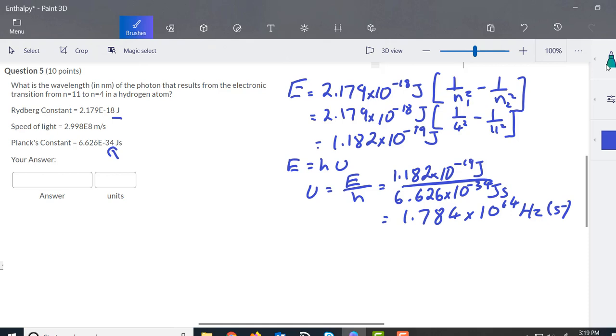Once we've got the frequency, now we can find the wavelength. C equals nu lambda. Now lambda is the wavelength, so lambda is going to equal C divided by nu, which is the frequency we just found.